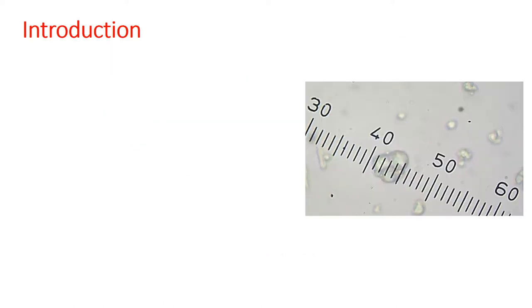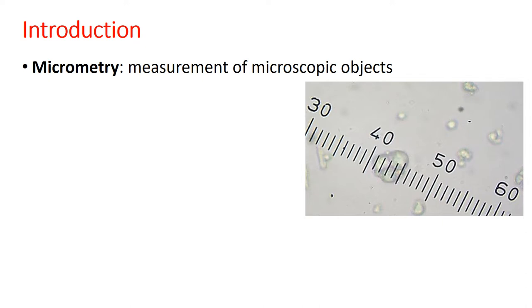Before moving on to the detailed practical, we will have a brief introduction as to why this practical is important. This kind of practical, wherein we are measuring the size of microscopic objects, is called micrometry. The objects are microscopic and we use a microscopic scale to determine their mean diameter, length, or width.